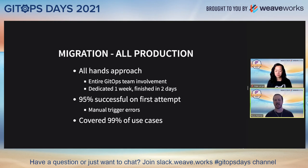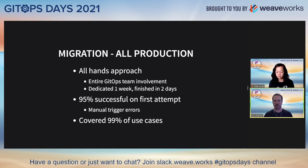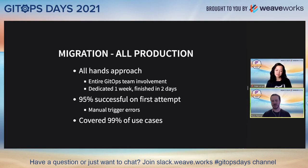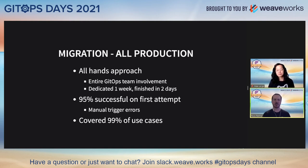We dedicated one week with the whole team but were actually able to get it done in only two days. We were about 95% successful on the first attempt. The errors we saw were typically manual trigger errors — fat-fingering values, missing some resource quotas, things like that. We didn't get them all right the first time, but we quickly fixed the others shortly thereafter. At the end, this process covered 99% of our use cases. I'll talk about that 1% in just a little bit.